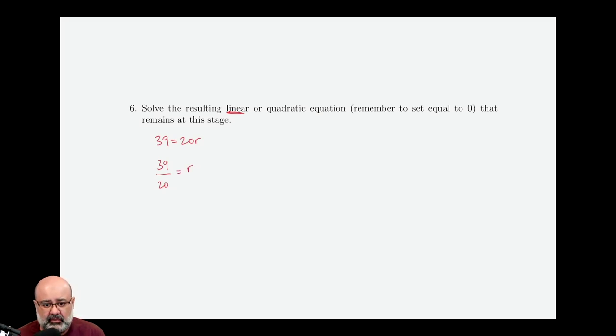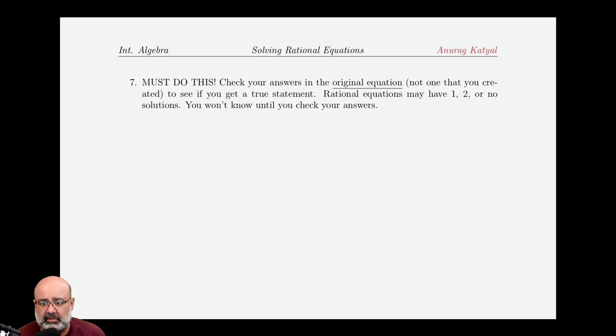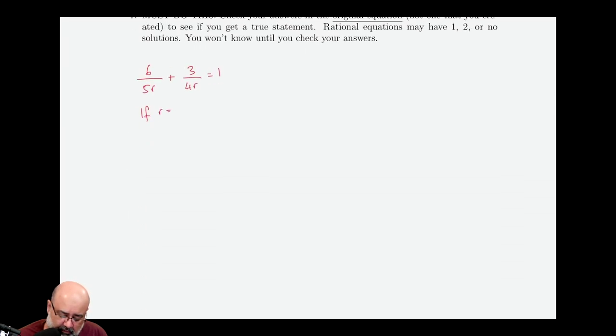This, as a reminder, is a potential solution. We don't know that it's a solution until we check our answers in the original equation, which was 6 over 5r plus 3 over 4r equals 1. So if r is equal to 39 over 20...